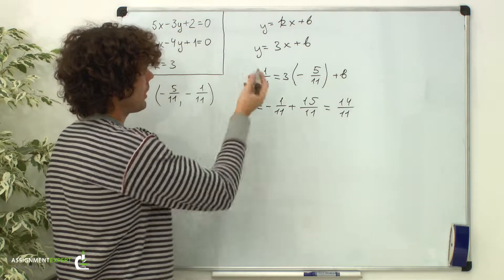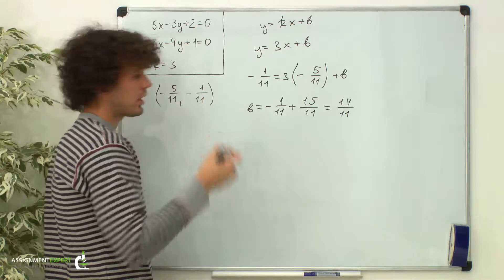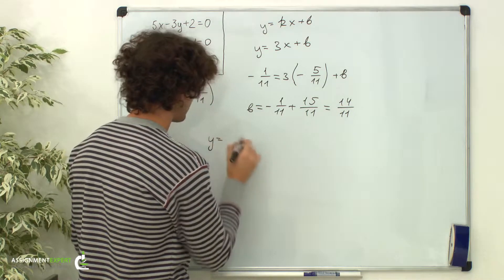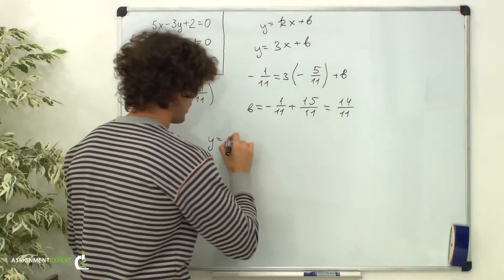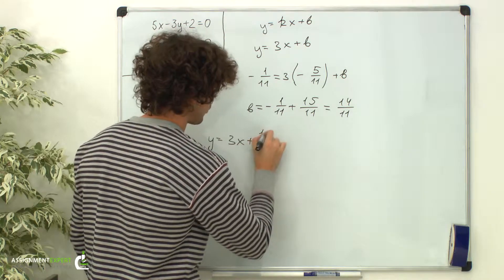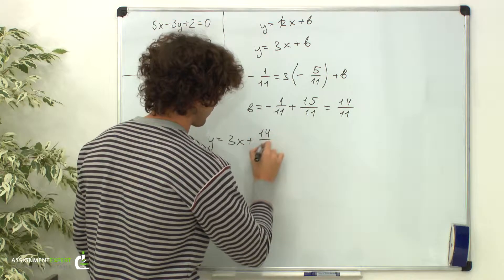So the equation of that line is y equals 3x plus 14/11.